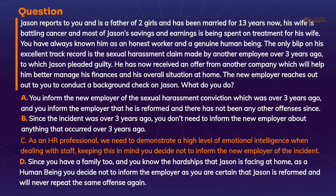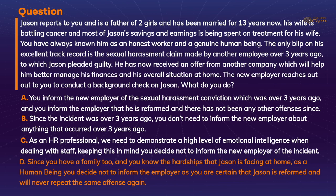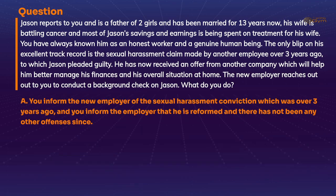The correct answer is A — yes, you have to report it. Option C was presented as a trick answer: as an HR professional, demonstrating emotional intelligence does not mean withholding factual information. If we know anything about EQ, this is not being emotionally intelligent. Option B is also wrong — there is nothing in the law that mentions a time frame of three years, five years, or seven years. Option D is also incorrect. These are difficult decisions we need to take as HR professionals, and Jason is probably going to be unhappy about it, but we have to deal with it. The correct answer is A: you must inform the new employer of the sexual harassment conviction.